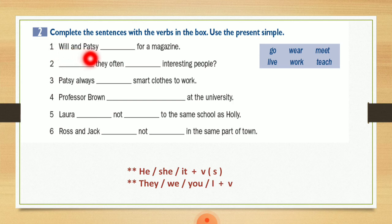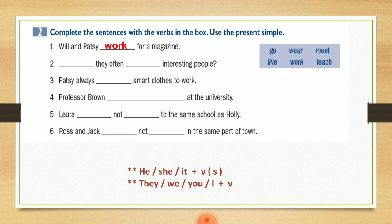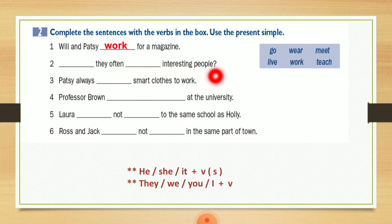Let's start with number one: Will and Patsy for a magazine. رح يكون عندي هون الجواب — بختار الفعل المناسب وهو work. فراح تصير: Will and Patsy work for a magazine. Number two: They often interesting people. هون عندي keyword لالـ simple present اللي هي often. وفي عندي question — ننتبه لأنه في عندي question mark. ما ننسي إنه بحالة الأسئلة بالـ present simple لازم أبدأ بـ does أو do. بما إني عندي they معناته رح يبدأ سؤالي بـ do: Do they often meet interesting people?